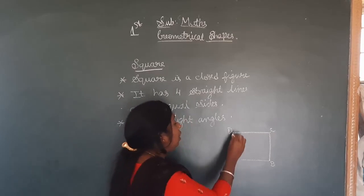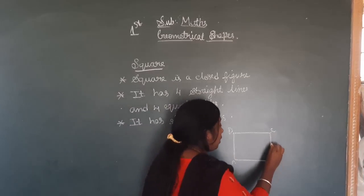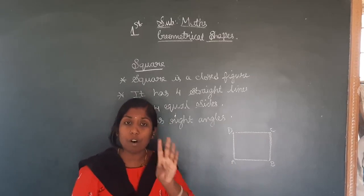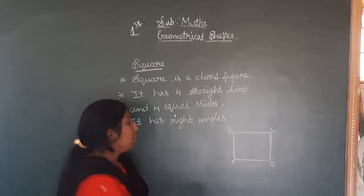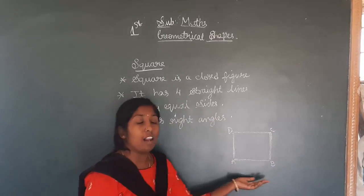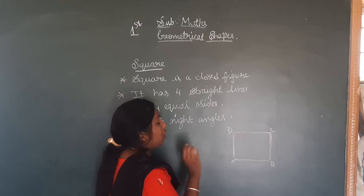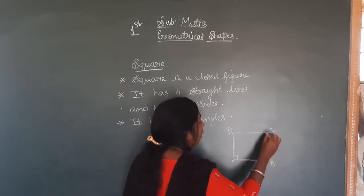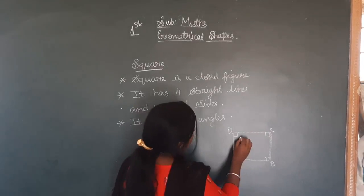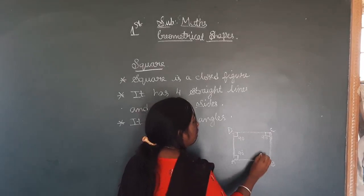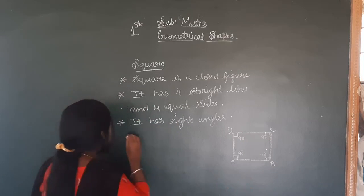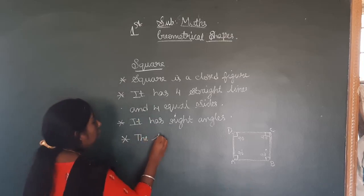All sides are equal. In a square there are four sides and all four sides are equal. One, two, three, four straight lines, and all are equal in the square. The angle here means straight lines, right? Straight means 90 degrees. The angle in each corner is 90 degrees. So the sum of the angles is 360 degrees.